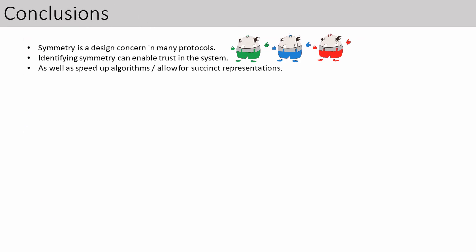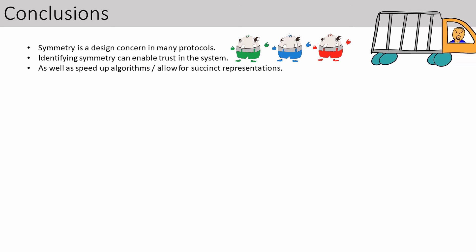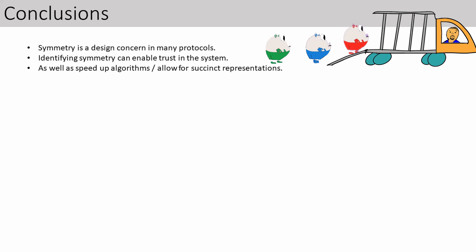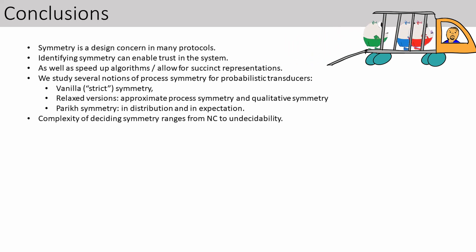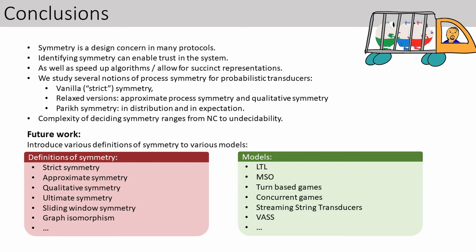Some concluding remarks before I pack my things and go away. Symmetry is a design concern in many protocols, and identifying it can be used both for gaining trust and understanding of the system, as well as for speeding up algorithms or succinctly representing specifications. In this work, we study several notions of process symmetry for probabilistic transducers. The complexity of determining whether a transducer admits a certain kind of symmetry ranges from NC through PSPACE and all the way to undecidability. There is a lot to do in the context of process symmetry — many other definitions are interesting, and also many other models such as automata, games, logic, etc. Thank you for listening!